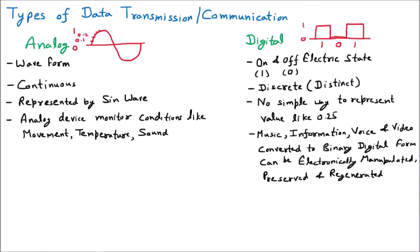To summarize what we have learned: analog is a waveform in continuous sine waves, and temperature, pressure, sound, and movement are analog signals. Digital uses zero and one — discrete — with no representation like 0.25. Once we convert analog to digital form, it is very easy to work with electronically. Now let us take some examples of analog signals.